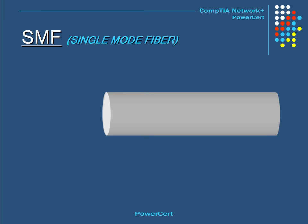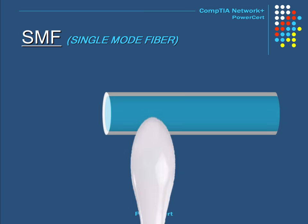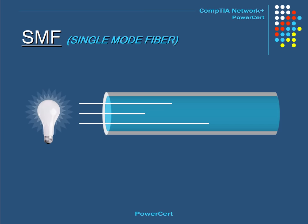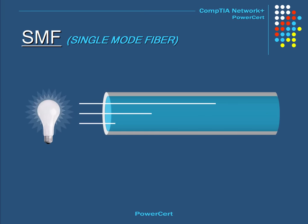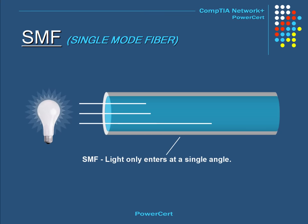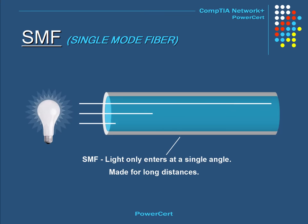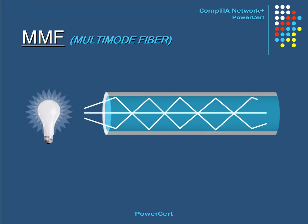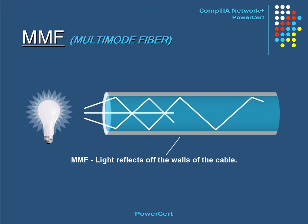Fiber optic cable uses pulses of light to send data, making it very fast and capable of spanning great distances. There are two different modes in fiber optics: single-mode and multi-mode. Single-mode fiber allows light to enter only at a single angle — when this transmission enters at this angle, it can span for great distances. Multi-mode fiber is different in that light travels in multiple beams that reflect off the walls of the cable. Unlike single-mode fiber, multi-mode fiber is made for short distances.